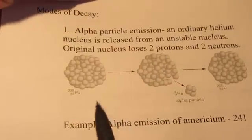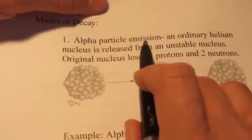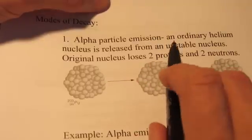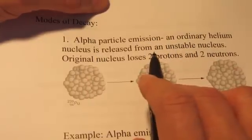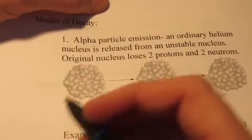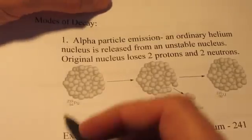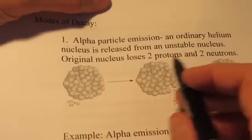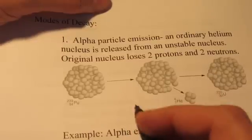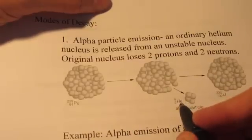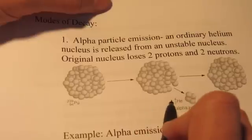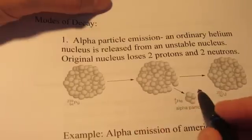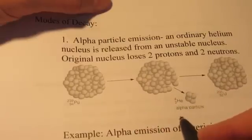So the first type of particle we're going to talk about is an alpha particle. Now an alpha particle simply is an ordinary helium nucleus, and it's released from an unstable nucleus of a radioactive atom. Now the original nucleus will lose two protons and two neutrons, which of course is the same as the mass of a helium atom. Two protons making the atomic number 2, plus two neutrons making the mass number 4. So it's identical to the nucleus of a helium atom.